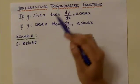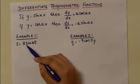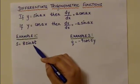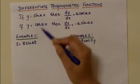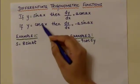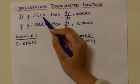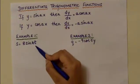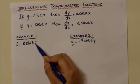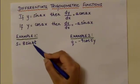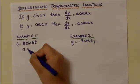Example 1: s equals 8 sin 4t. We can see that s is a function of sin, which is a function of t. Comparing with the formula, a is the coefficient of the variable with respect to which it is differentiated. In this case, the equation is differentiated with respect to t, and the coefficient of t is 4. So a equals 4.